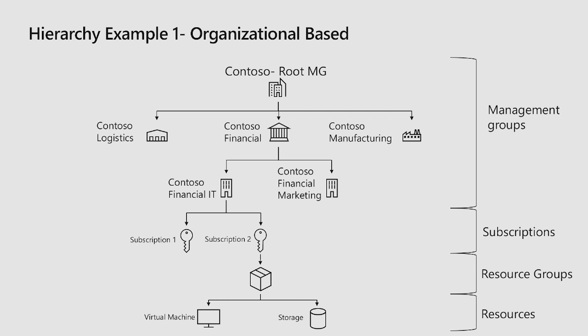Underneath Contoso Financial IT, you can see there are two subscriptions. Those subscriptions have resource groups and resources underneath them. Because of that, you can apply different policies and role accesses on any level of this hierarchy. Placing something on the root level applies it to everything you can see. Applying role access on Contoso Financial IT gives you the ability to apply those roles on top of all those subscriptions — subscription one and two — and the virtual machines and storage under subscription two. Everything inherits down.